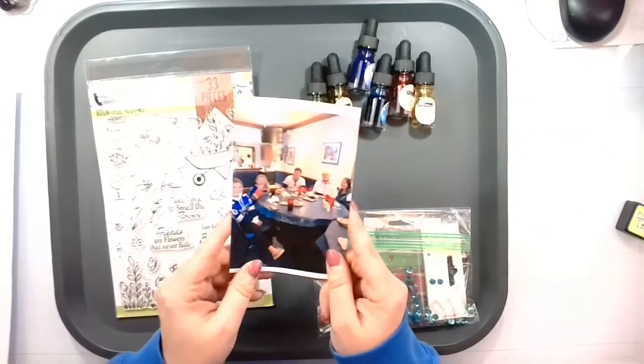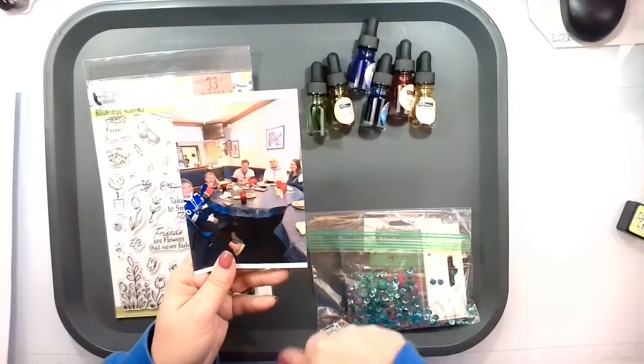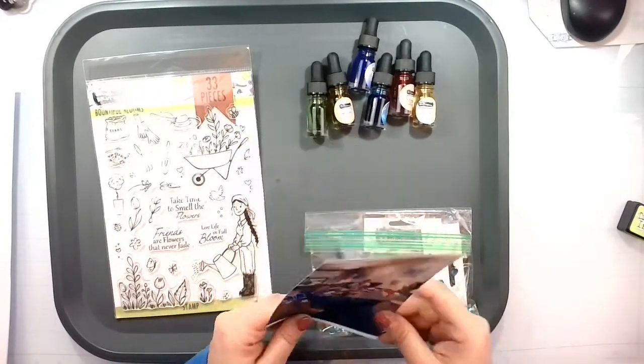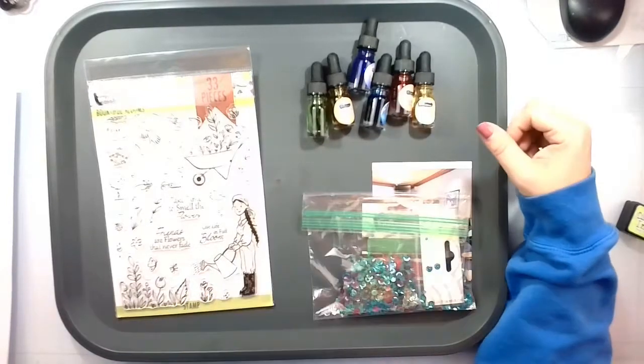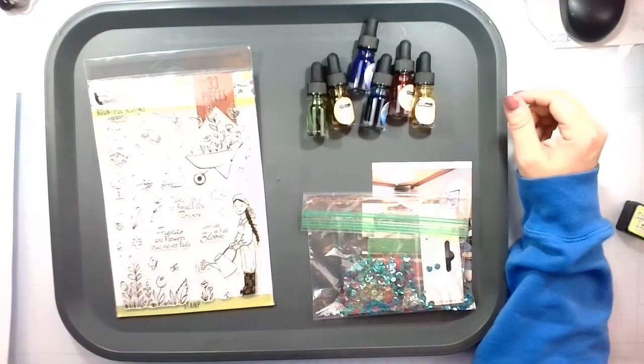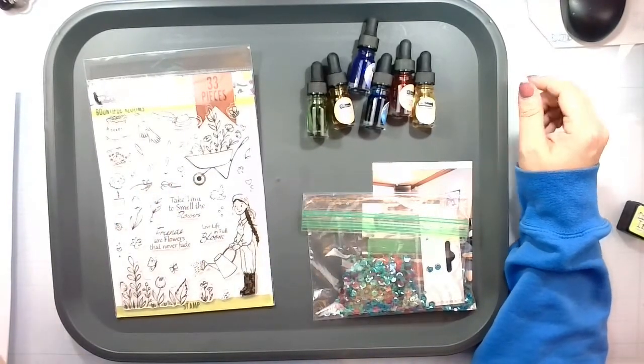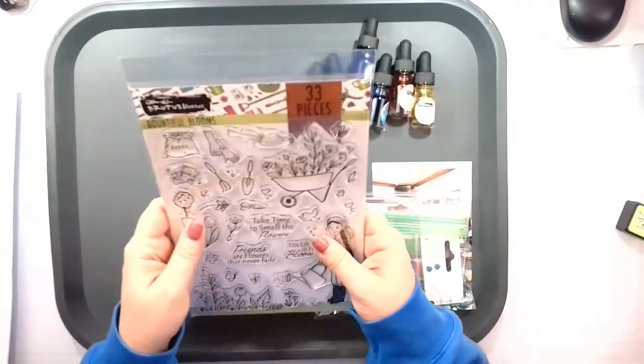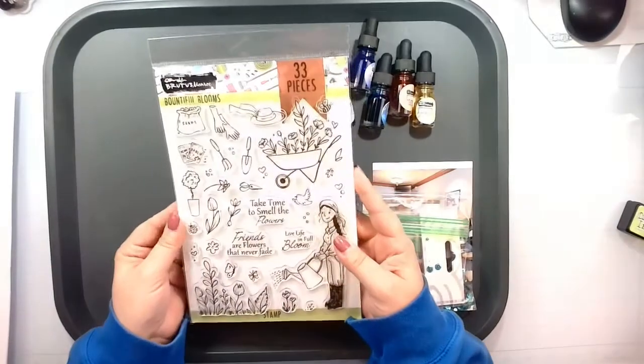I have a very fun photo of us eating dinner. So this is the family with our niece, Evie. And this is going in my Blues Day album. And I'm also using my How to Kill a Kit with Style for April. And I'm going to pull in the Bountiful Blooms stamp set.